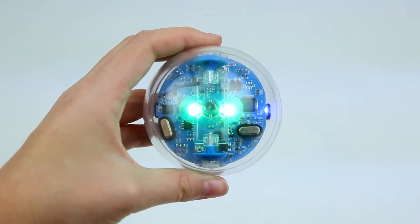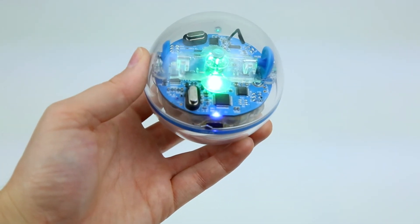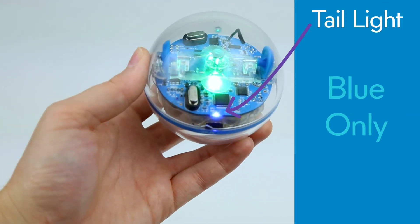The third light is a blue-only LED light on the back of Sphero called the tail light, or back LED, that is used for aiming but can also be programmable.